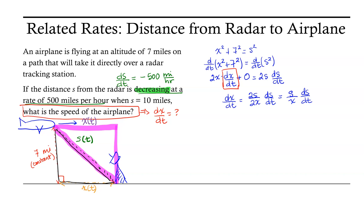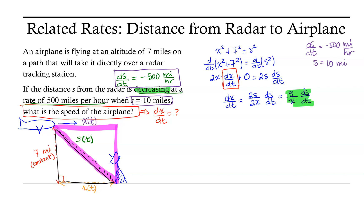We can find dx/dt provided we know s, x, and ds/dt. Let's take an inventory of what we know. We know that ds/dt equals negative 500 miles per hour. We also know the value of s we're interested in: s equals 10 miles. The only remaining piece of information we need is the value of x, which we still need to find.